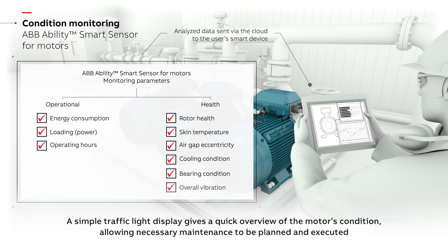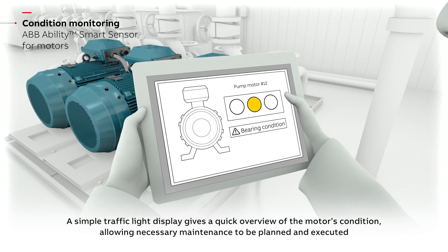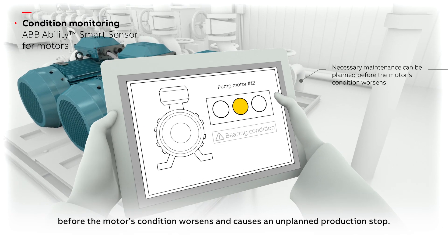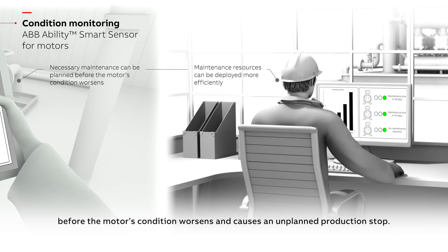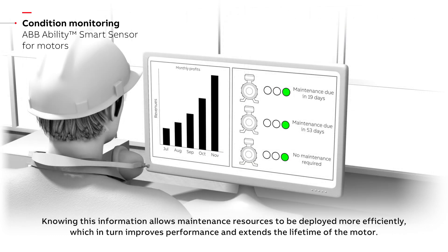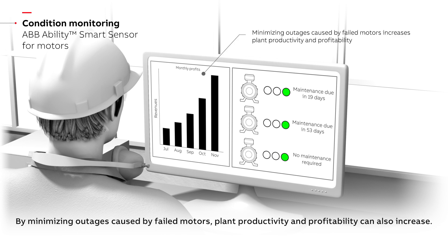A simple traffic light display gives a quick overview of the motor's condition, allowing necessary maintenance to be planned and executed before the motor's condition worsens and causes an unplanned production stop. Knowing this information allows maintenance resources to be deployed more efficiently, which in turn improves performance and extends the lifetime of the motor. By minimizing outages caused by failed motors, plant productivity and profitability can also increase.